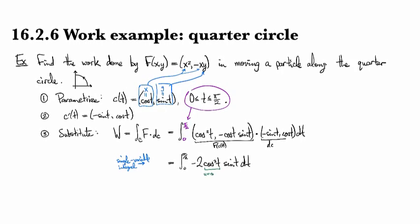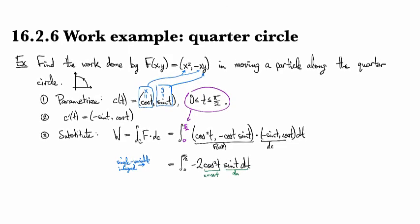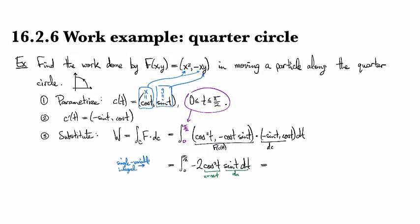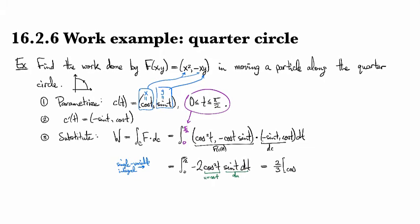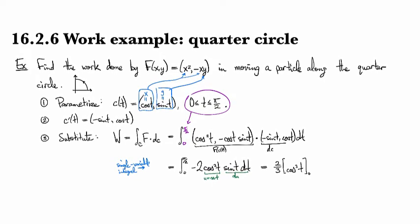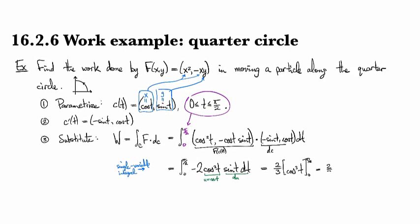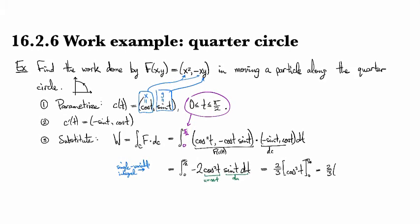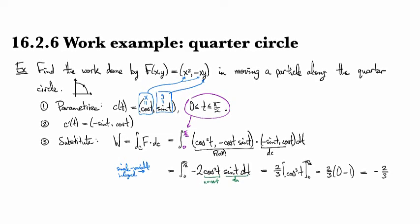If I put u equal to cosine t, then I've got a du right here. And so after doing that, I get 2 thirds cosine cubed t evaluated from 0 to pi over 2, which gives me 2 thirds times 0 minus 1. So I have minus 2 thirds.